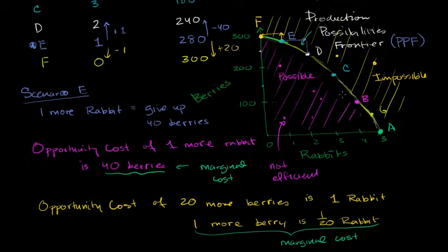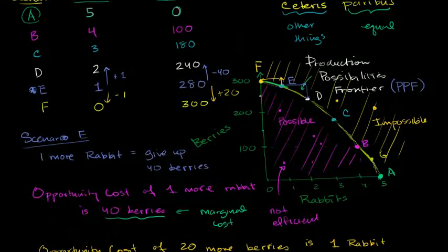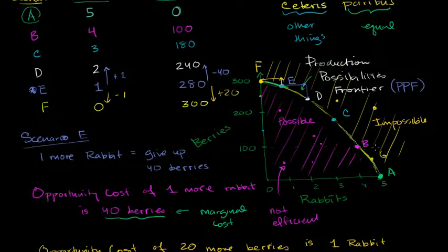And we could do it at different points in this curve, and I actually encourage you to do. Based on the data that we have in this table that we constructed in the last video, and maybe this curve, think about what the opportunity cost is in the different scenarios. If you're in scenario B, and if you want an extra rabbit, how much is that going to cost you in terms of berries? Or if you want more berries, what's that going to cost you in terms of rabbits?